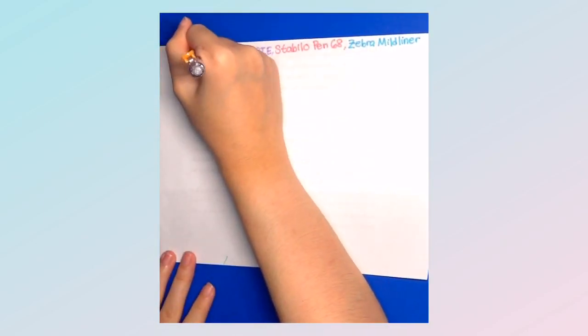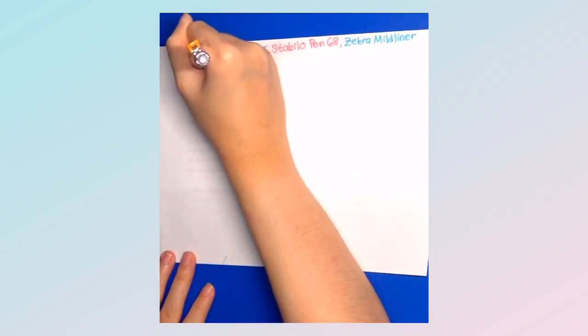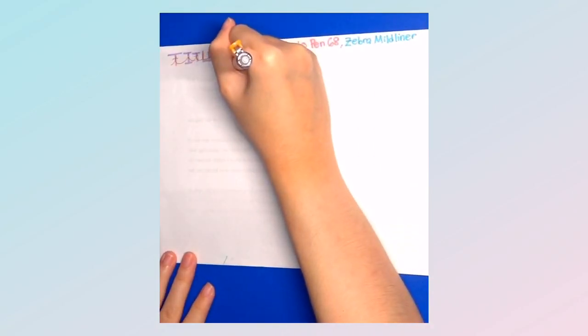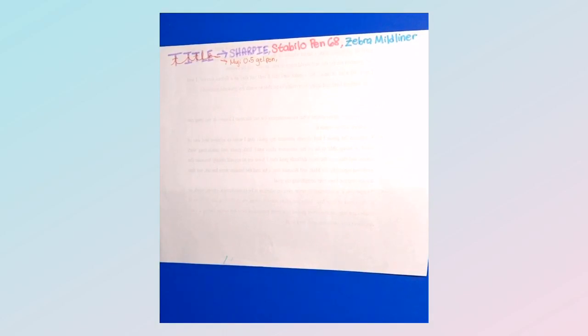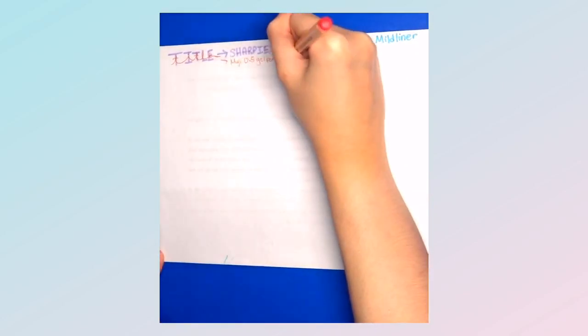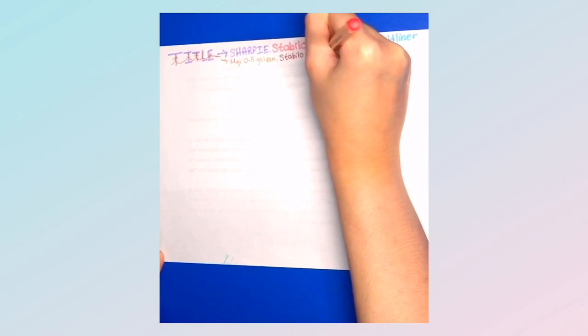Next, I use a pen and write the title in small caps and in cursive form at the middle of the title that I created with the highlighter. For my pens, I either use my Muji Gel pens or the Stabilo 0.88.